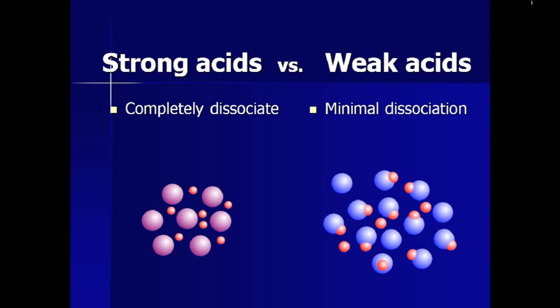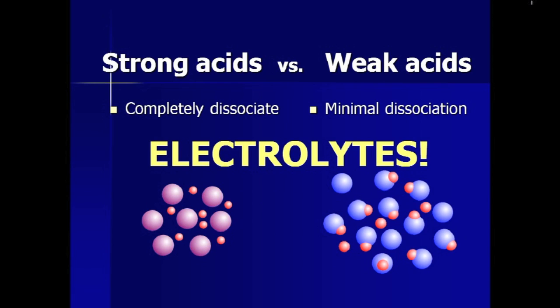Strong acids dissociate completely in solution, and weak acids only dissociate a little bit. This sounds a lot like another strong and weak reference we've discussed. Electrolytes! Remember that strong electrolytes are solutions composed of completely dissociated ions, while only a small fraction of dissociated ions exist in a weak electrolyte solution.